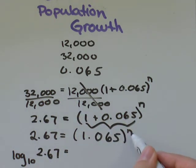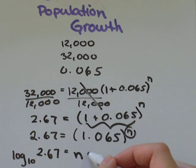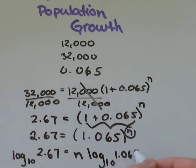When I take the log of this side, the exponent will actually come ahead of the log. Like that. n times log of base 10 of 1.065.